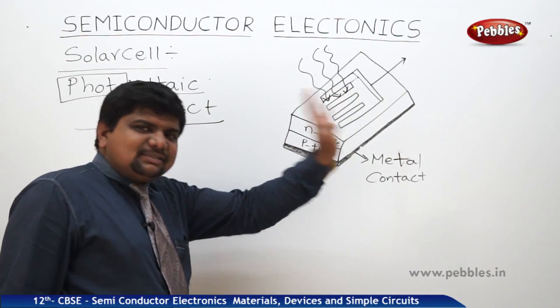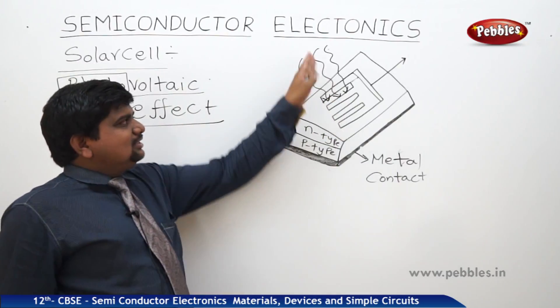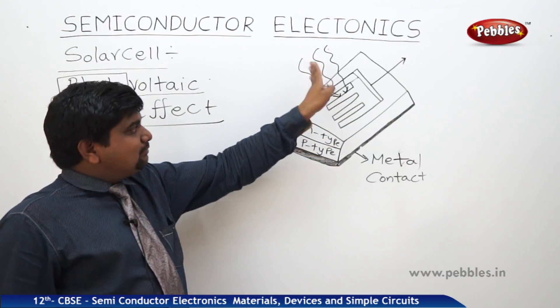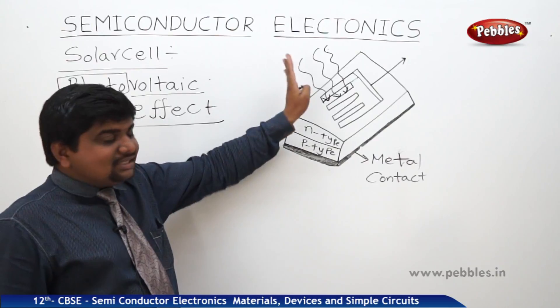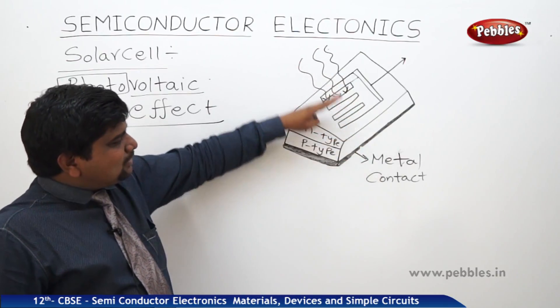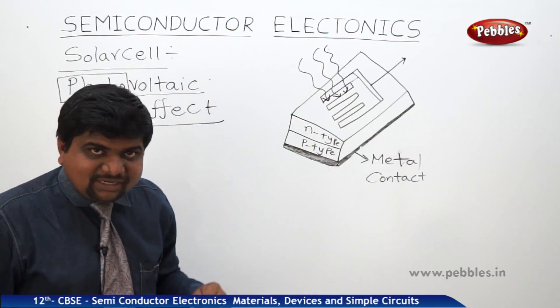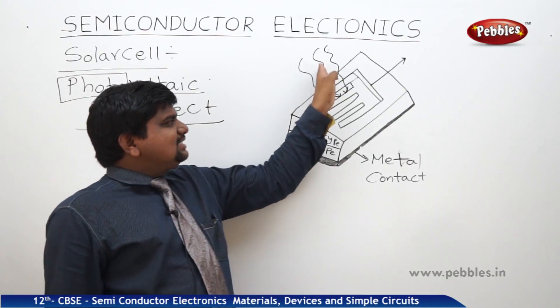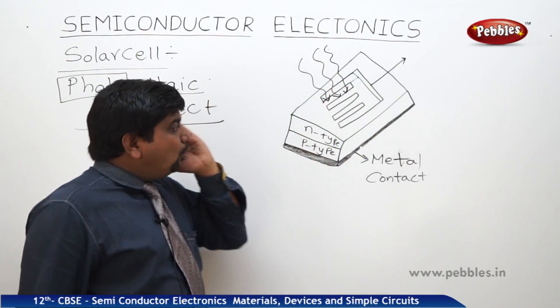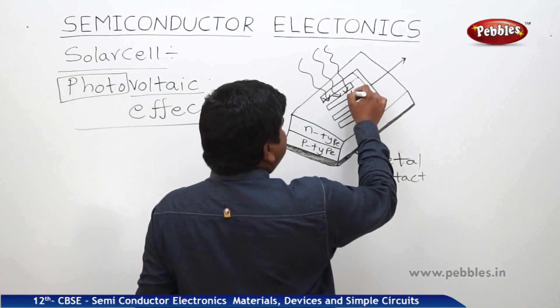So, what is the use of all these parts? Whenever there is a light of some energy gap which has some bandwidth which can be able to overcome the gap between the n-type and P-type semiconductors, whenever that light is incident on this metal surface, only 15% of this metal is placed on the n-type.